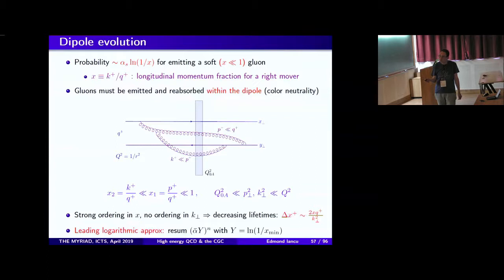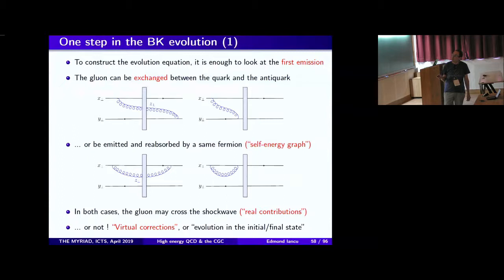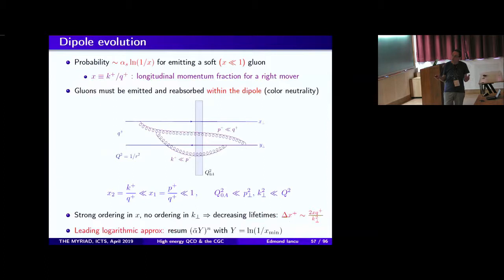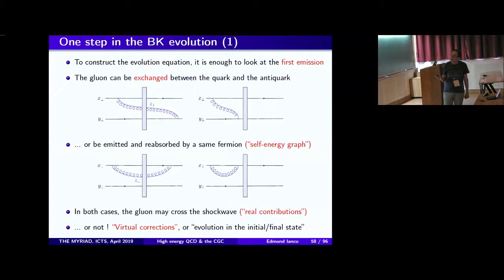To write an evolution equation it is sufficient to perform one step — one gluon emission. There are various topologies. The gluon must be emitted and reabsorbed within the dipole to maintain color neutrality, so all emissions and absorptions happen inside the dipole wave function. In one single step we can have exchange graphs — gluon emitted by one quark and reabsorbed by the other — or self-energy graphs — emitted and reabsorbed by the same quark. In both cases, the gluon can cross the shockwave (real contribution) or not (virtual contribution, which modifies the probability of finding the original quark-antiquark dipole at the interaction time).